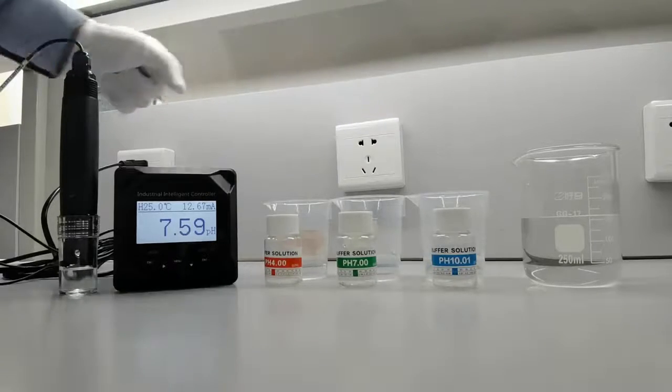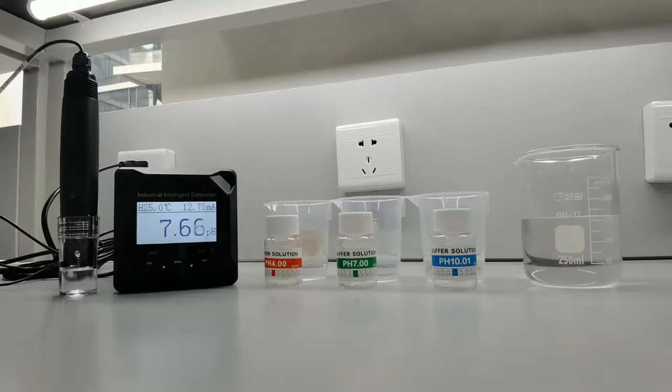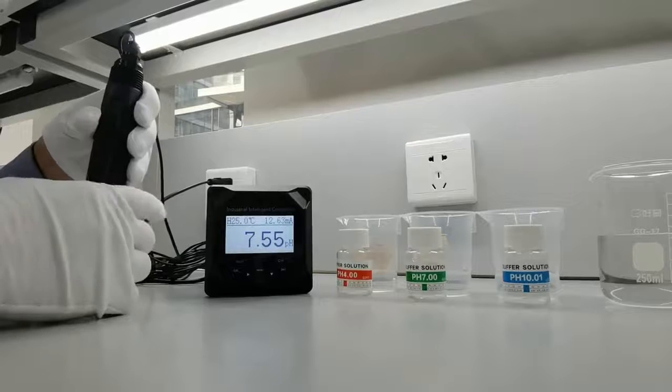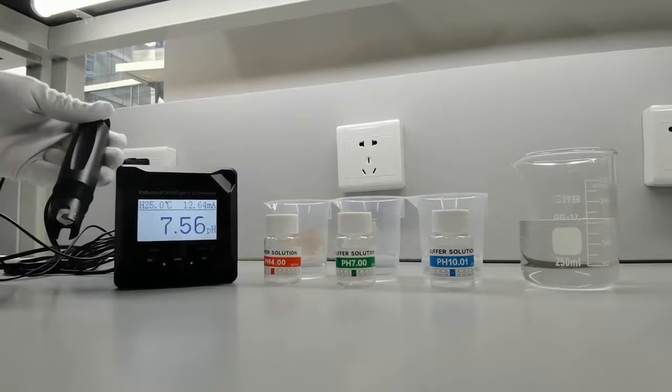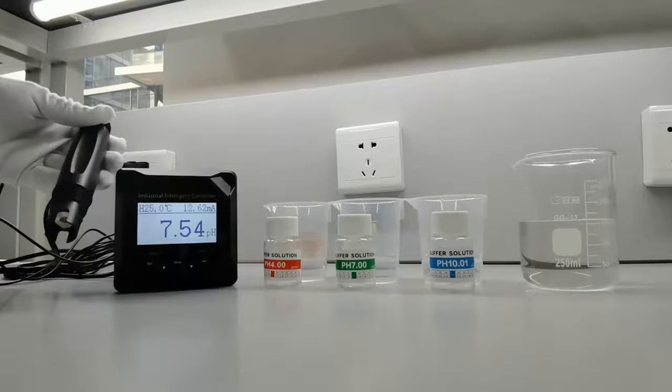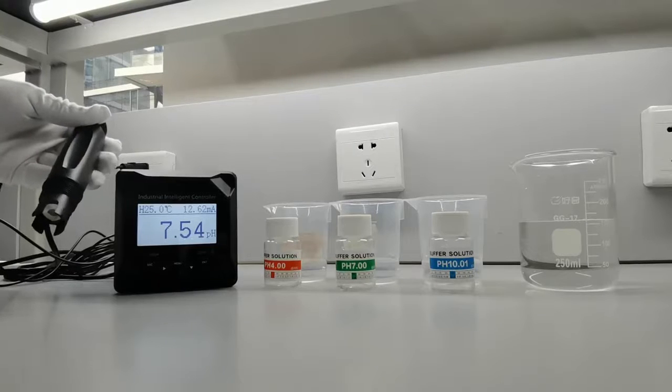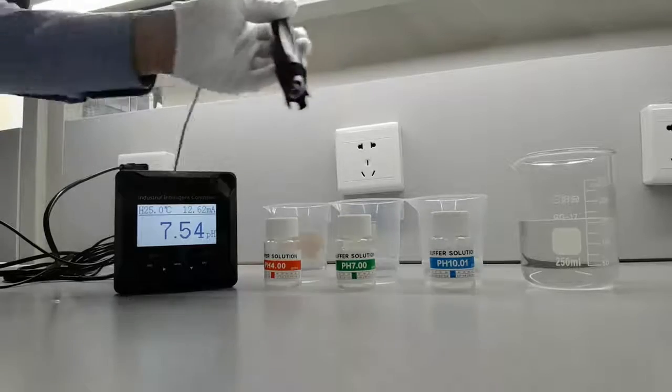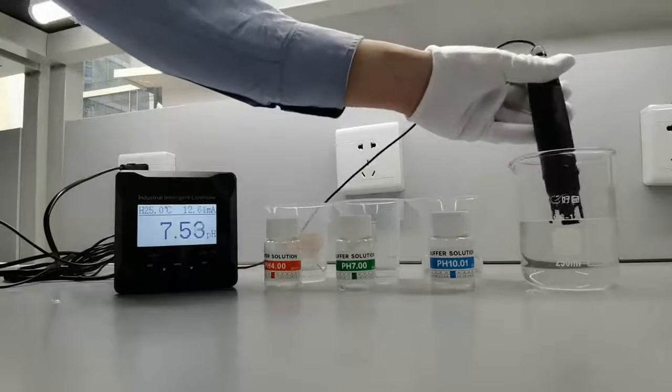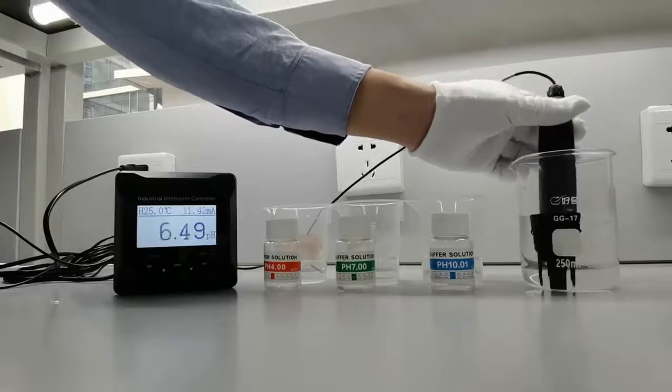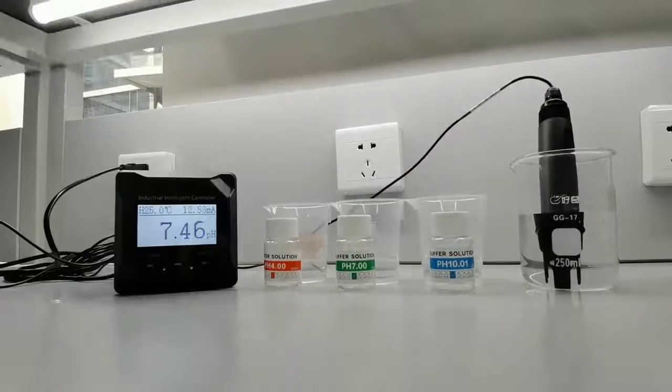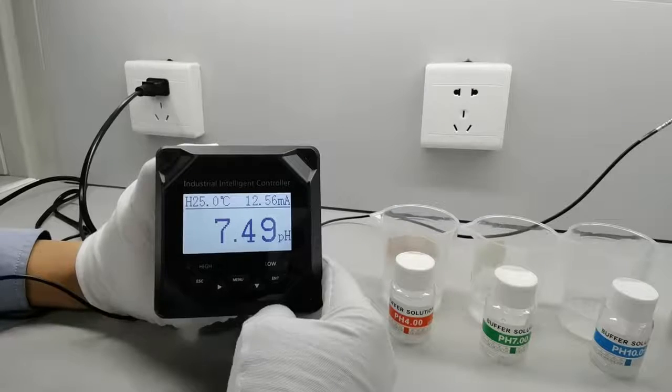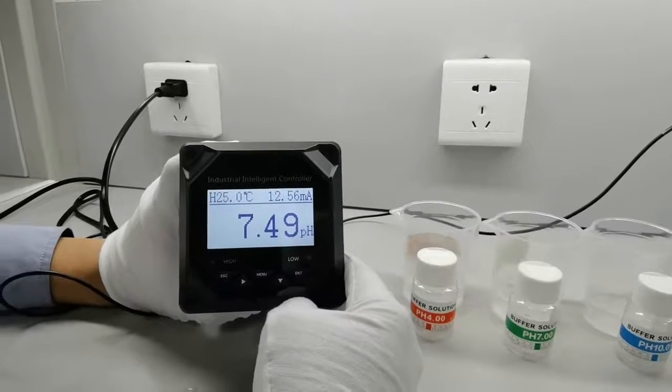The first step is to remove the protective cap. The electrode or pH meter needs to be stored properly and immersed in storage solution to prevent it from drying out. Next, the electrode must be rinsed using distilled water. To calibrate this pH meter, review the manual for proper procedure. To start, let's go to the controller.